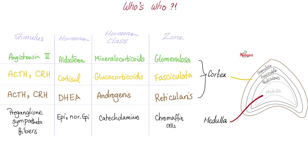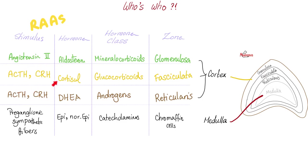To recap the adrenal cortex: zona glomerulosa secretes mineralocorticoids such as aldosterone. Zona fasciculata secretes glucocorticoids such as cortisol. Zona reticularis secretes adrenal androgens such as DHEA, dihydroepiandrosterone. Cortisol increases glucose by glycogenolysis — breaking down glycogen into glucose — and gluconeogenesis, making glucose from non-carbohydrate sources such as proteins. The stimulus for aldosterone release is angiotensin 2 via the renin-angiotensin-aldosterone system. The stimulus for zona fasciculata and reticularis is ACTH from the anterior pituitary, thanks to CRH from the hypothalamus.